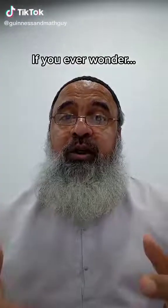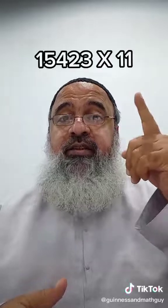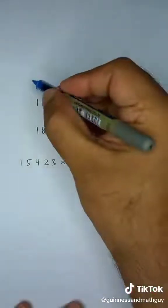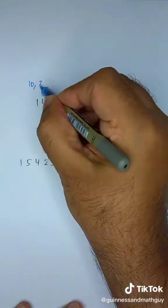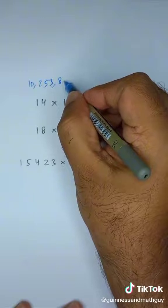If you ever wonder how people multiply huge numbers like this, here's how they do it. No matter how big a number is, you can multiply it by 11 in seconds.